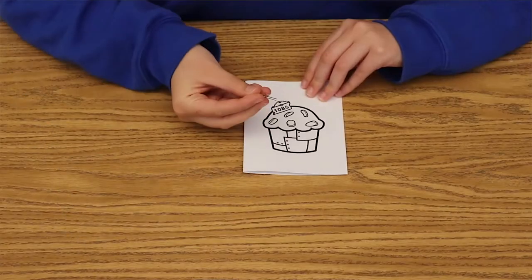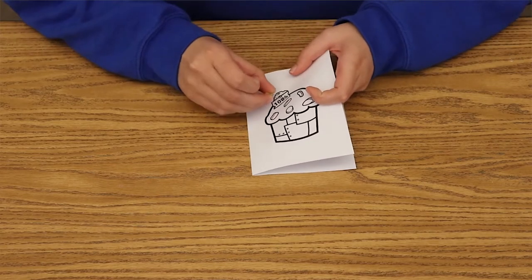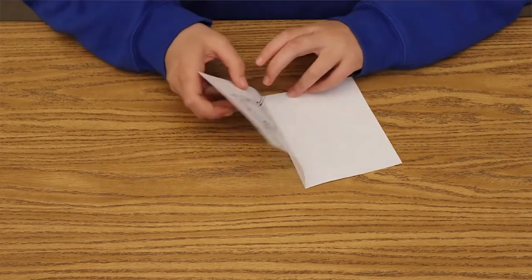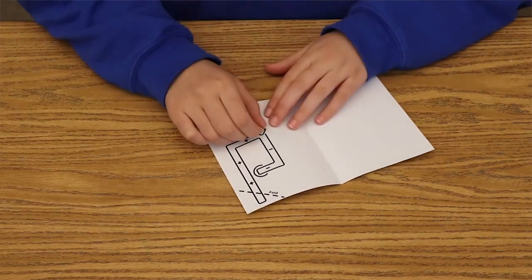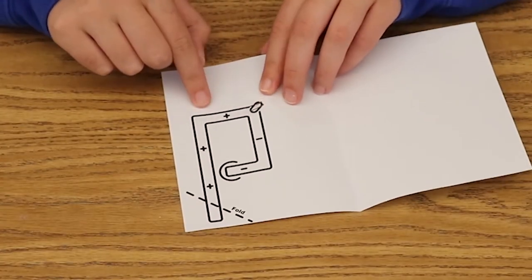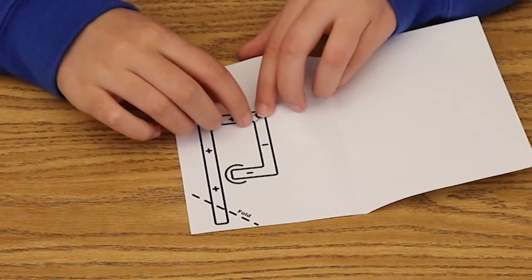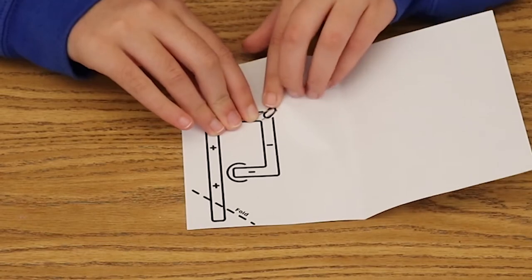Then, take the LED light and poke it through the front of the card so that it lines up with the oval on the back. Make sure the longer prong is closer to the positive side and the shorter prong is closer to the negative side. Then bend the prongs so that they align with the circuit card template.